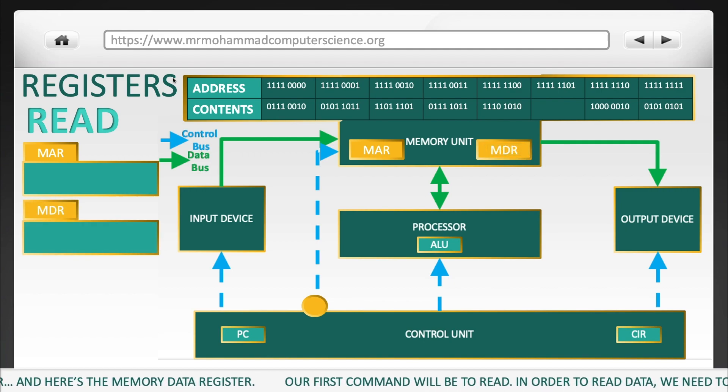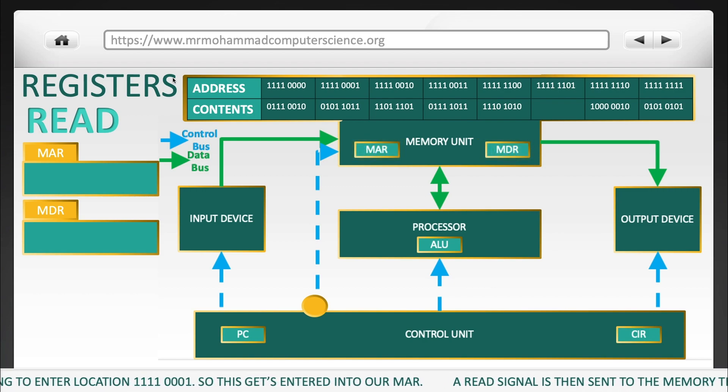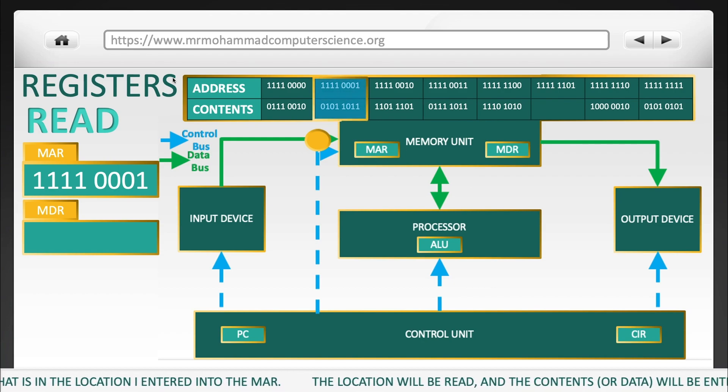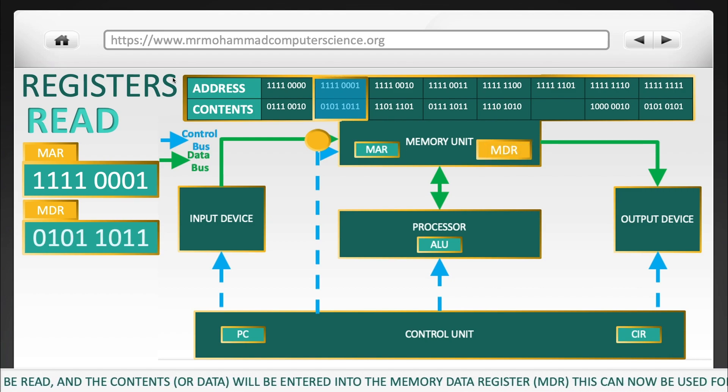Our first command will be to read. In order to read data, we need to enter the location in the MAR. So I'm going to enter the location 11110001. A read signal is then sent to memory through a control bus to tell memory to read what is in the location I entered into the MAR. The location will be read, and the contents will be entered into the MDR. This can now be used for whatever the next instruction wants to use it for.